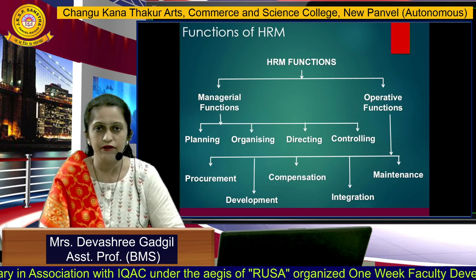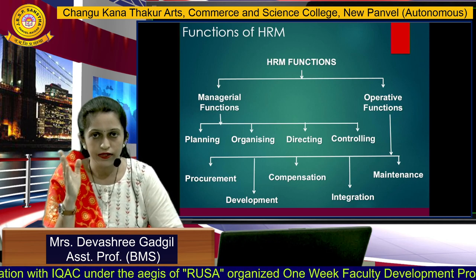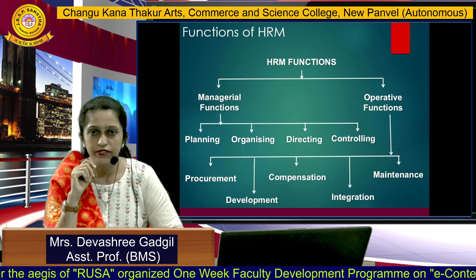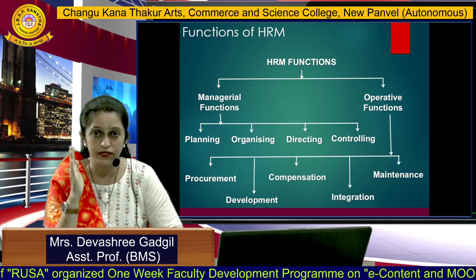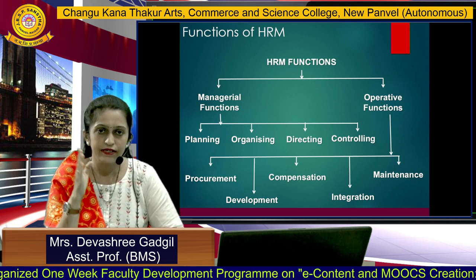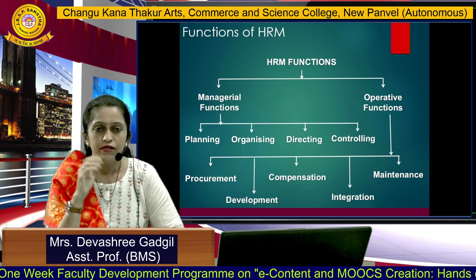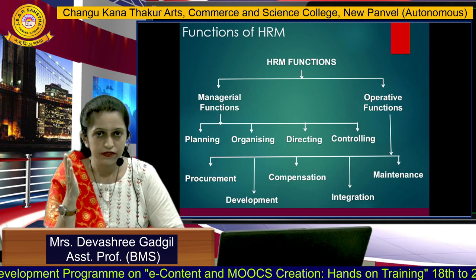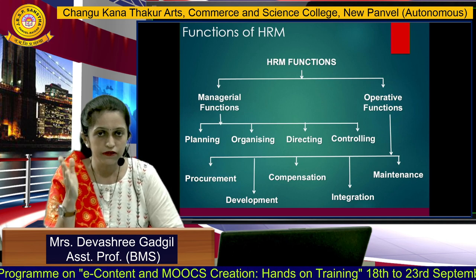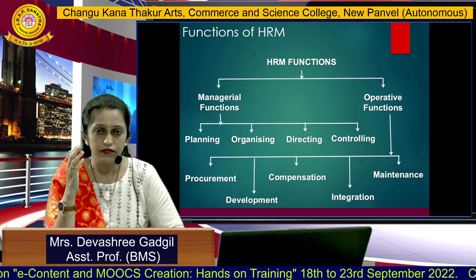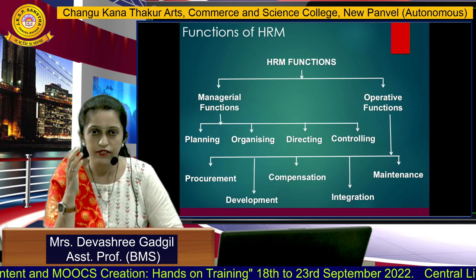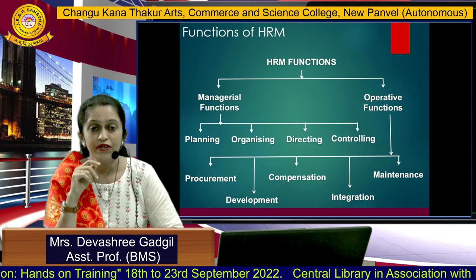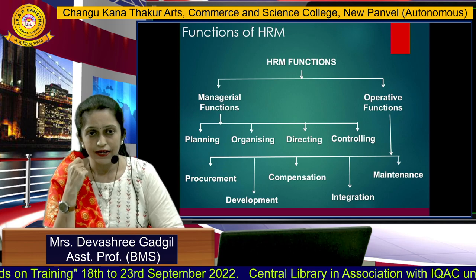Now let us understand what are the functions of HR. Number one is managerial functions, number two is operative functions. Under the managerial functions come HR planning, organizing, directing, and controlling. Under the operative functions come procurement, development, compensation — which is a major function of HR as it is necessary to pay compensation regularly to employees — integration, and maintenance.